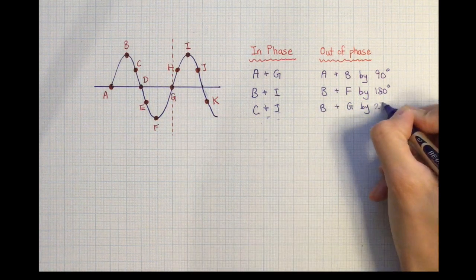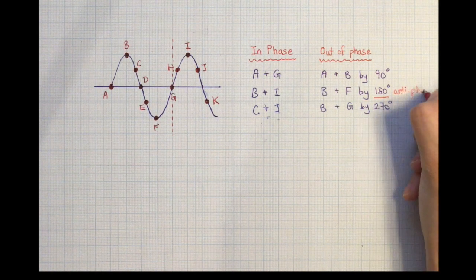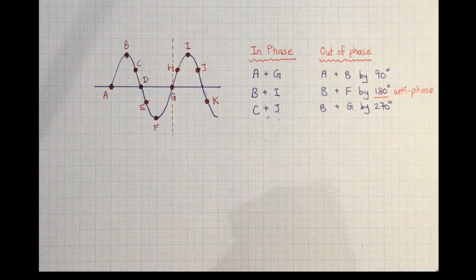We have a special name for positions or particles that are out of phase by 180 degrees. We call that anti-phase.